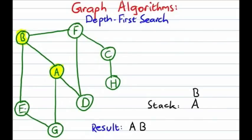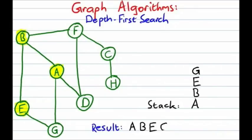We pick the one that's alphabetically least, in this case E, push it onto the stack, visit it, and mark it as visited. Now at the top of the stack we have E. We take a look at adjacent unvisited vertices — B is already visited, so the only one we have is G. We push G onto the top of the stack, visit G, and mark G as visited.